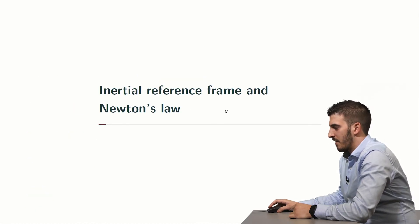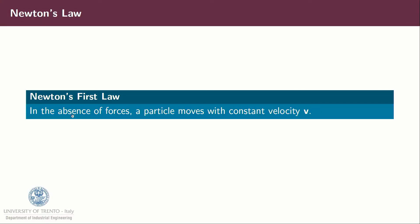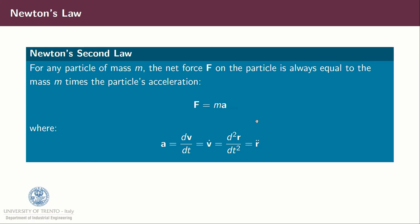Let's begin with the inertial reference frame and Newton's law, and in particular with Newton's law. Newton's first law states that in absence of forces a particle moves with constant velocity v. Newton's second law states that for any particle of mass m, the net force f on the particle is always equal to the mass times the acceleration. So f is equal to ma, where a is the time derivative of the velocity and it is the second derivative over time of the position vector. So r double dot.